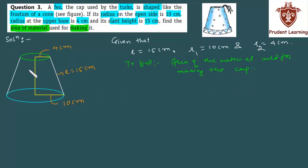Now here you must know that the area of material that should be used for making this cap is nothing but the sum of the curved surface area of this frustum and the area of this upper base which is circular in shape. So the area of material used is curved surface area of frustum plus area of upper circle.